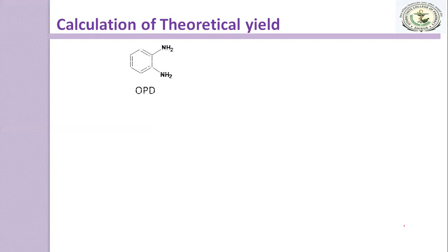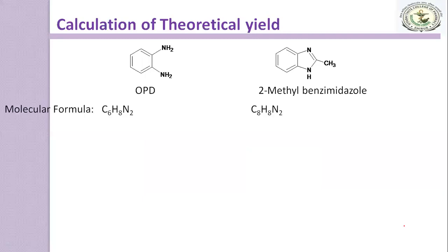Now, next part is the calculation. First of all, you have to calculate the theoretical yield. For that, you have to calculate the molecular formula and molecular weight of starting reagent that is OPD and the final product which is 2-methylbenzimidazole. The molecular formula of OPD is C6H8N2.